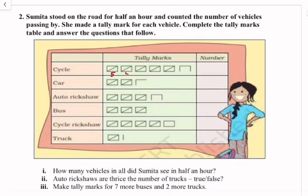We will write the number: Cycles - 5, 10, 15, 20, 25, and 3 - 28. Cars - 5, 10 - 12. Auto rickshaw - 5, 10, 15, 15, 3 - 18. Bus - 5, 10, 15. Cycle rickshaw - 5, 10, 15, 20, and 4 - 24. Truck - 5 and 1, 6. And the total is 103.